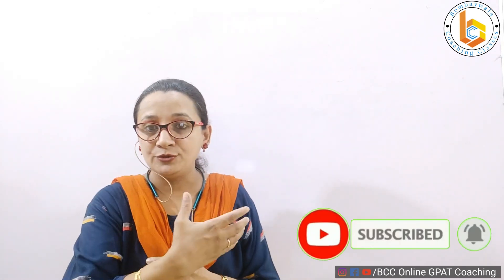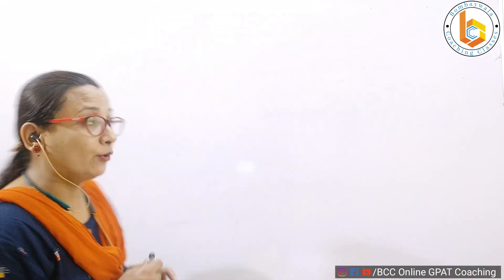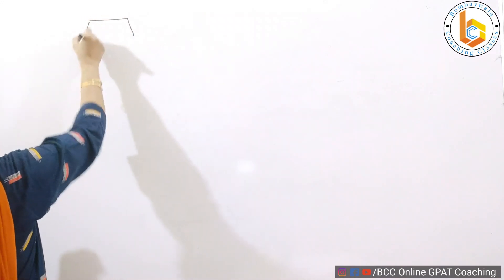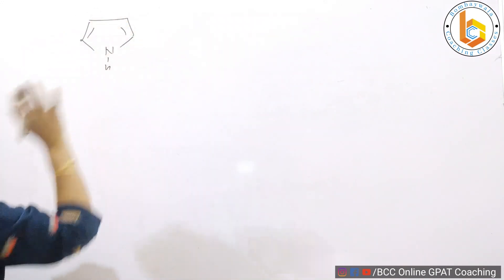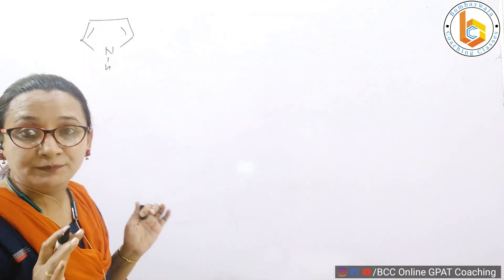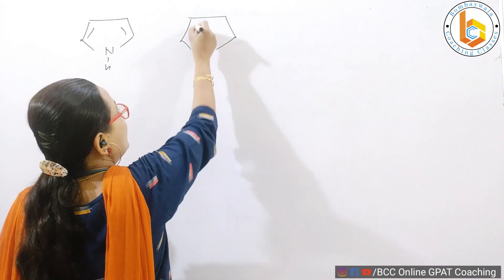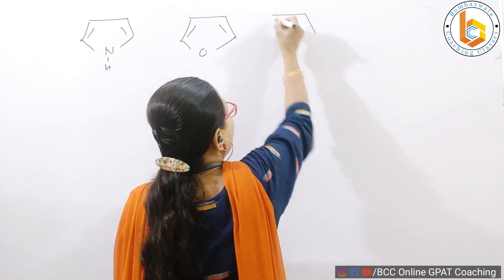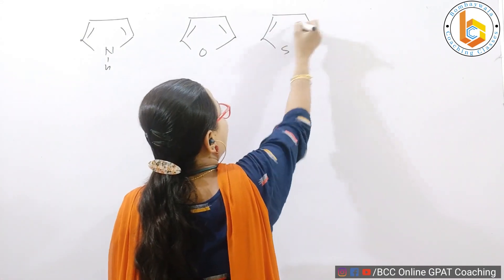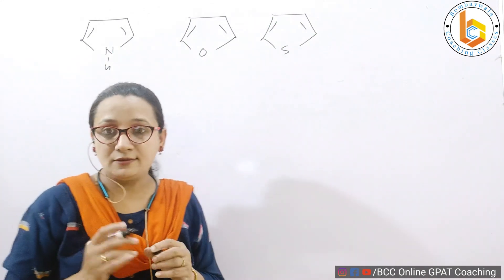In our last videos, we already introduced ourselves to these compounds. Now we know what is a pyrrole - it's a five-membered ring containing one nitrogen and aromaticity. We know what is a furan - it's a five-membered ring containing one oxygen. And we know about thiophene, which is a five-membered ring containing one sulfur. We know these rings, right?